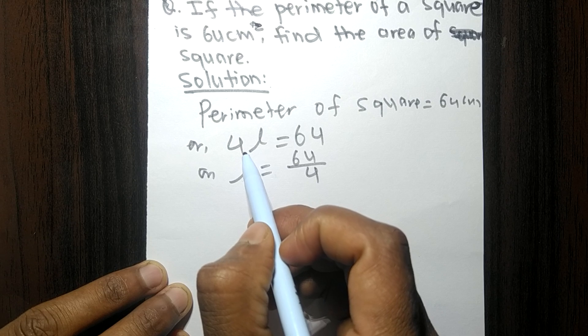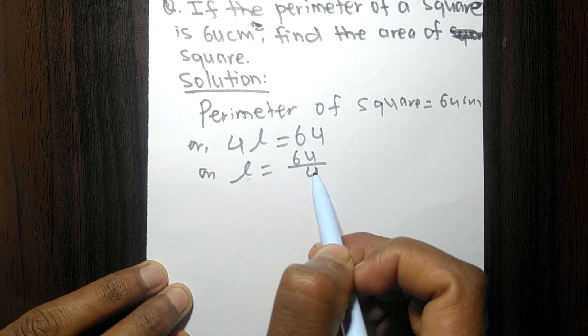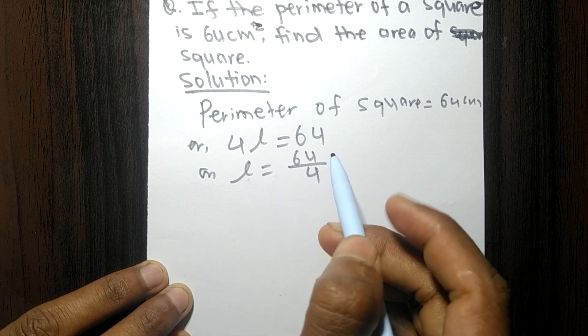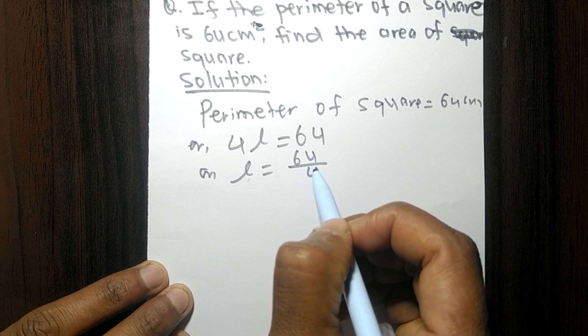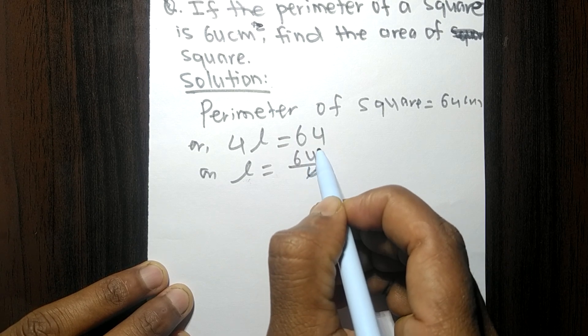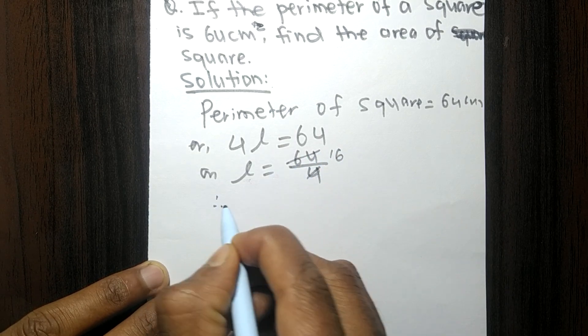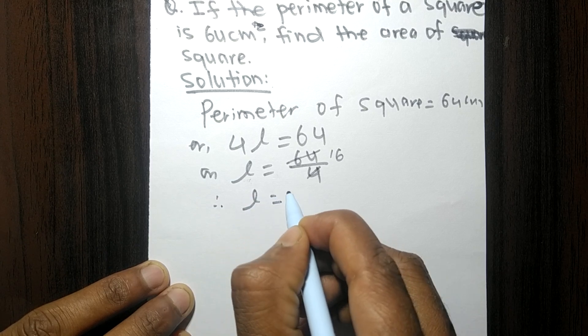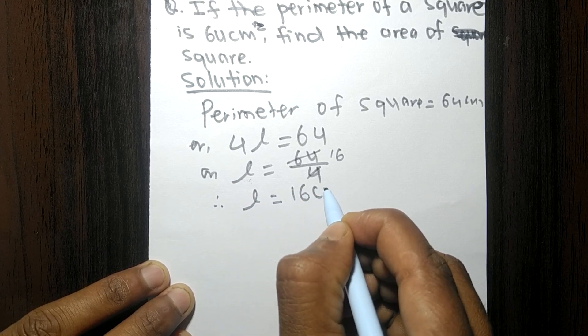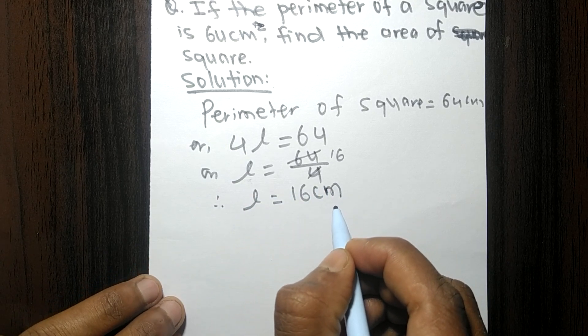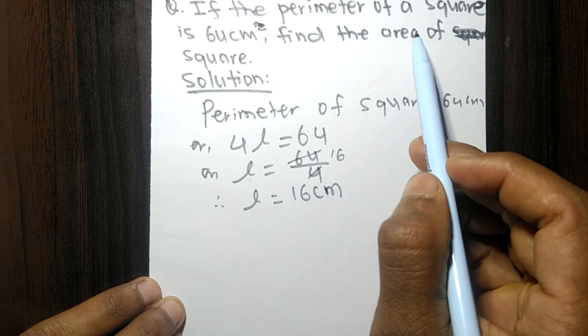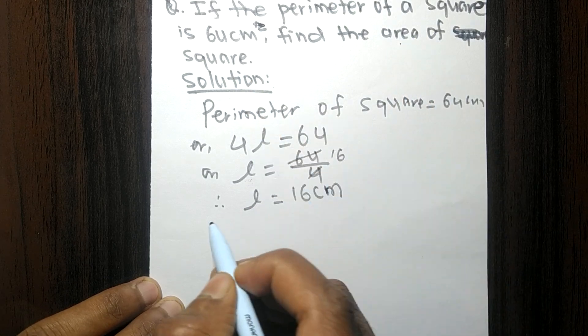So 4 here is in multiplication. It goes to the opposite side and becomes division. So 64 divided by 4, we get 16. So length is equal to 16 centimeters. Now we have to find the area of the square.